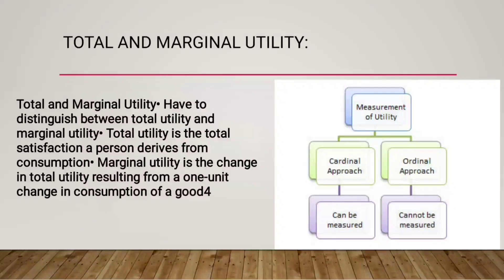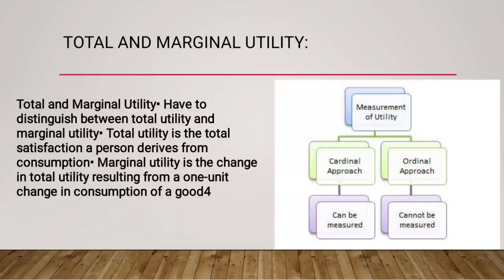Now, what is meant by total utility and marginal utility? Total utility is the total satisfaction which a consumer derives from their consumption. The word marginal means additional. So marginal utility is the additional utility derived by the consumer with the consumption of an additional unit of a commodity — that is, the additional satisfaction a consumer gets with the additional consumption of a product is called marginal utility.